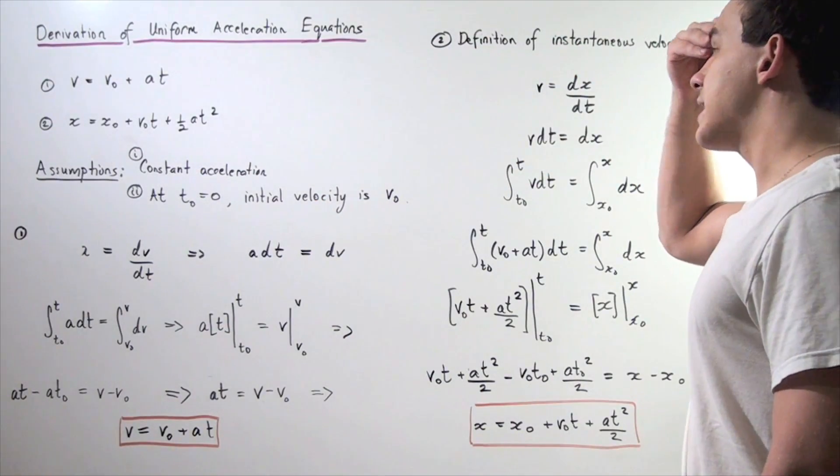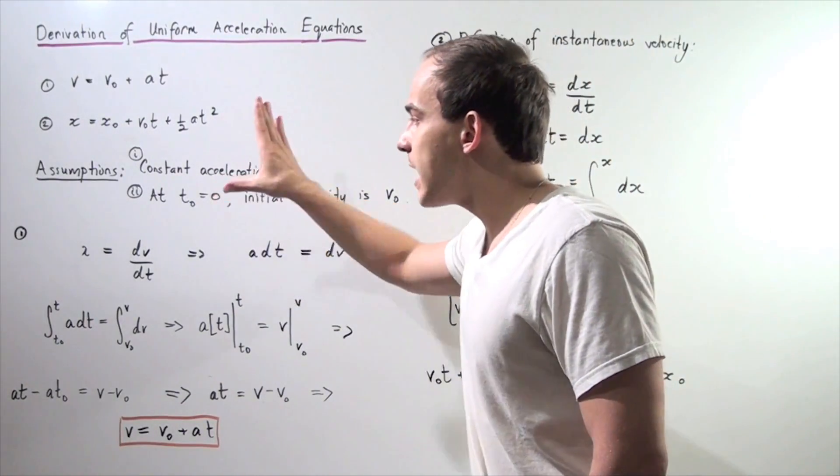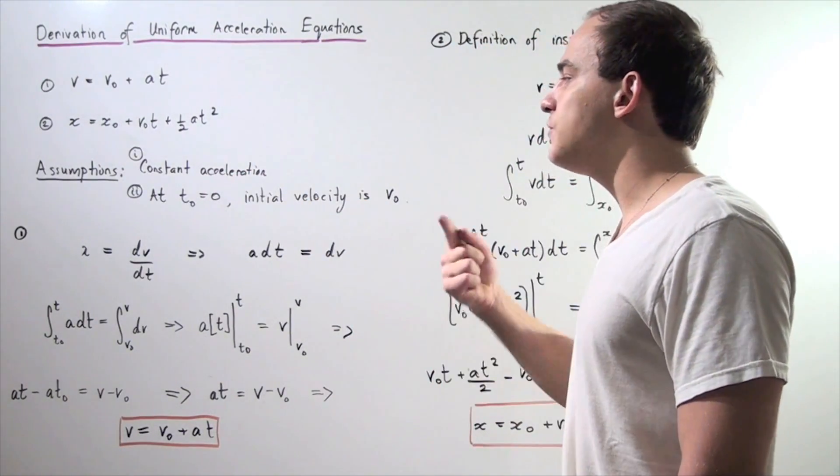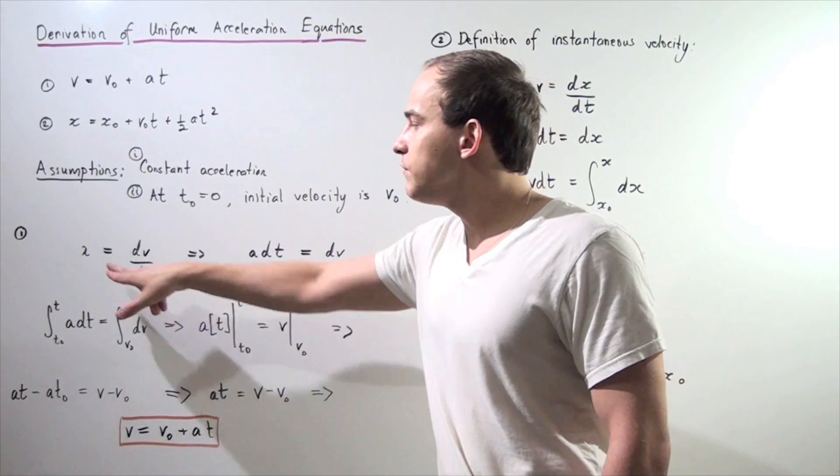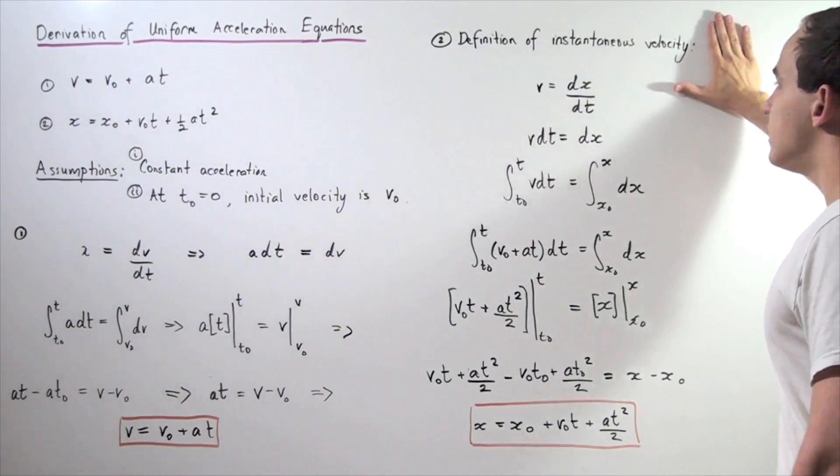Now, let's move on to the second formula. How do we derive the second formula? We begin with the same assumptions and now, instead of using our definition of instantaneous acceleration, we're using our definition of instantaneous velocity.